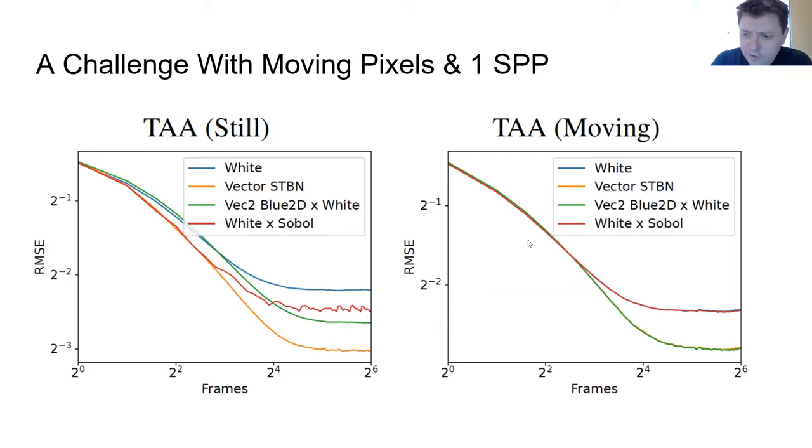So this is really only for one sample per pixel though. If you take two, three, or four samples per pixel you're still getting the benefits of better convergence. And any point in time that anything is still you're going to get some better convergence which will be carried along by temporal reprojection once it starts moving again.